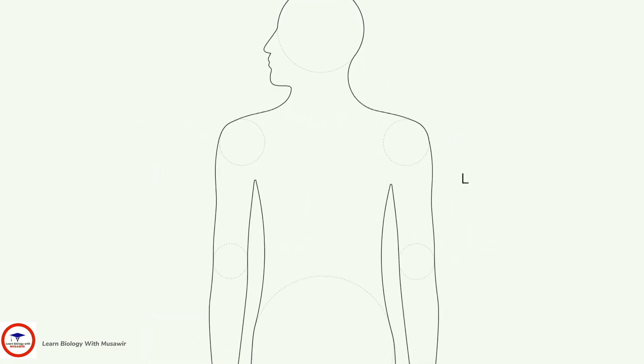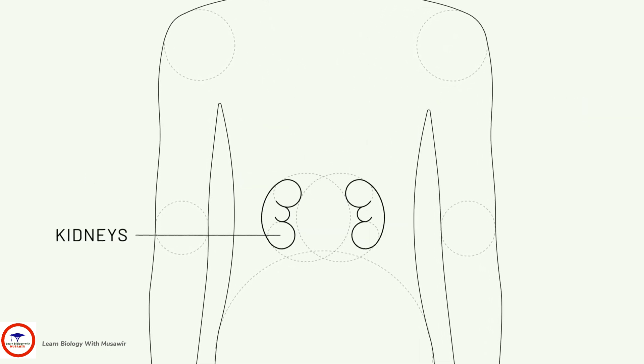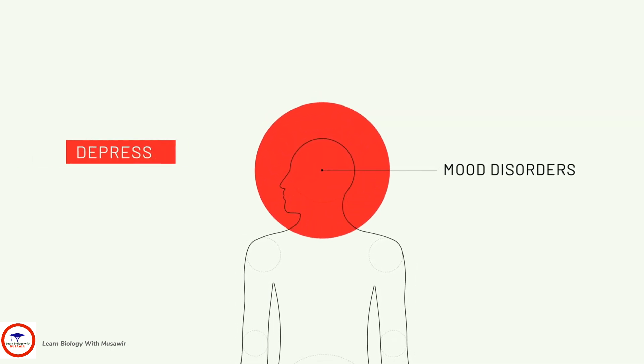RA can also damage organs like the lungs, liver, stomach, and kidneys. People with RA are also at a greater risk of developing mood disorders like depression and anxiety.